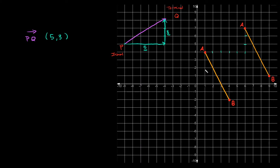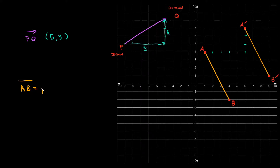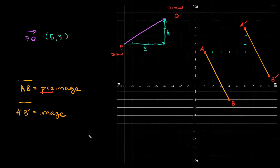Now we have an original and a copy. On the copy, point A becomes A prime and point B becomes B prime — add the prime symbols to denote which one we moved. The original segment AB is known as the pre-image, meaning the image before you made a copy. The translated copy, segment A prime B prime, is known as the image. Now let's jump into some examples.